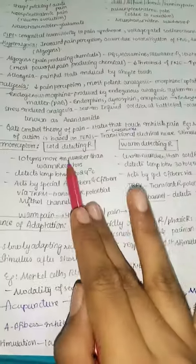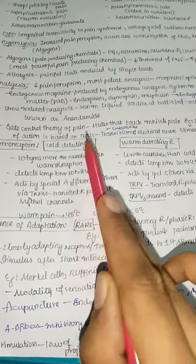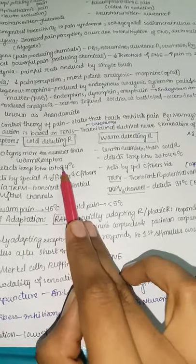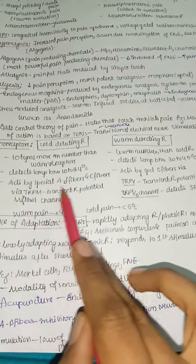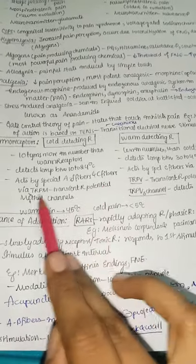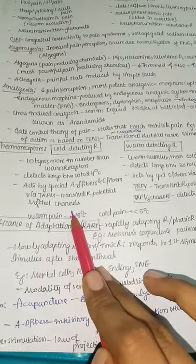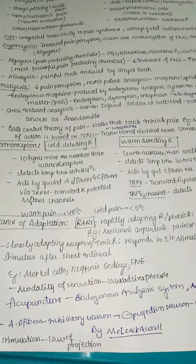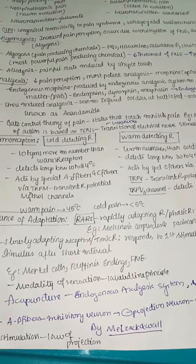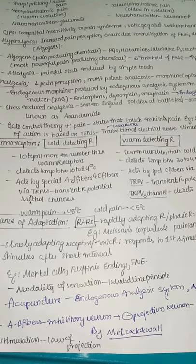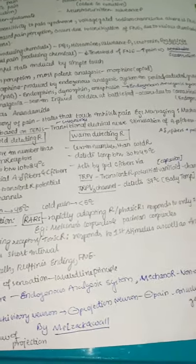Thermoreceptors: cold-detecting receptors are 10 times more numerous than warm receptors. They detect temperature between 10–24°C and act via A-delta and C fibers through TRPM (transient receptor potential menthol) channels — menthol activates these channels for cold sensation.